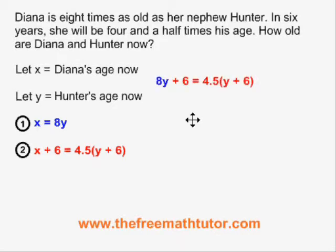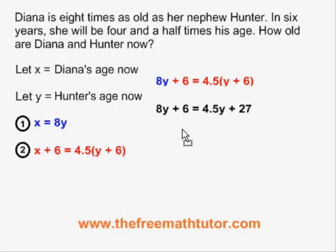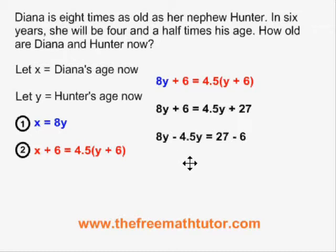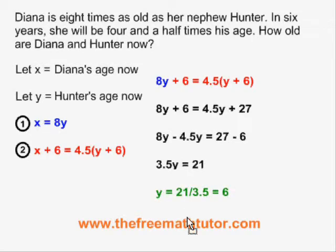After substitution, we get: 8y plus six equals four and a half times the bracket y plus six. Expanding gives 8y plus six equals four and a half y plus 27. Rearranging: 8y minus four and a half y equals 27 minus six, so three and a half y equals 21. Dividing both sides by three and a half gives y equals six.